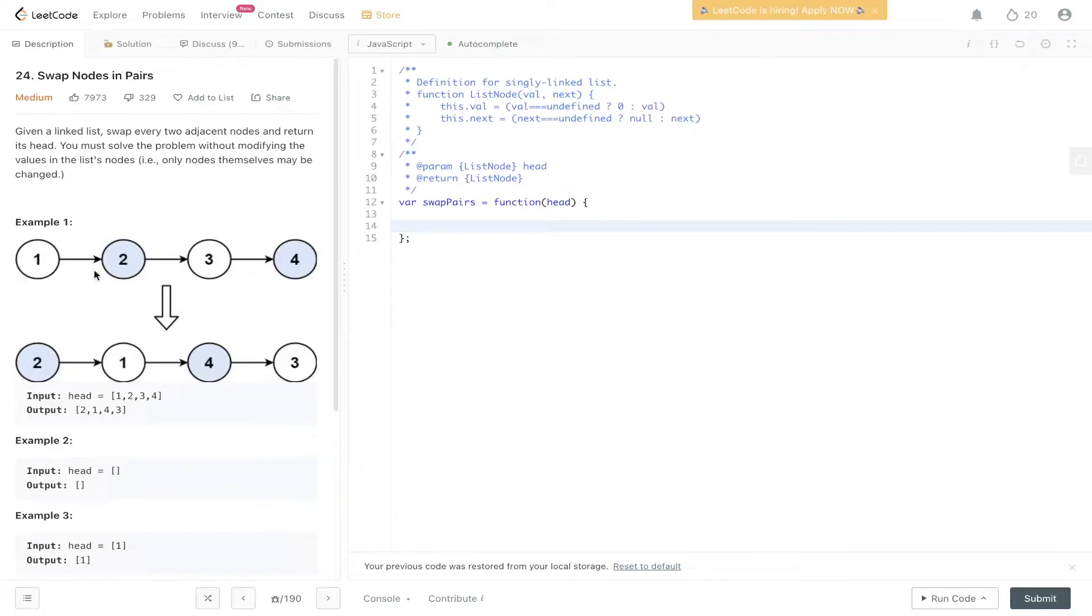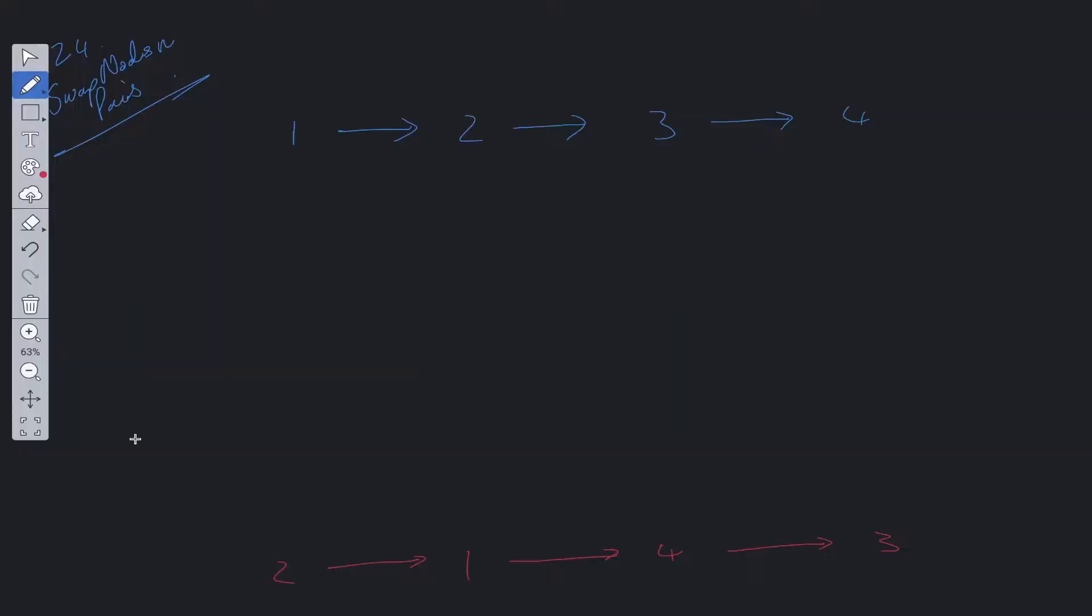In example one, we have converted this linked list. We have one, two, we've swapped those values to two, one. Three to four has also been swapped to four to three, and then we need to return the head. So we need to return this value here. The question itself is pretty intuitive as to what it's asking. The solution, however, is a bit more tricky.